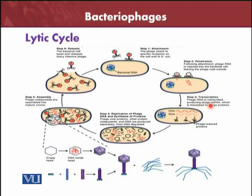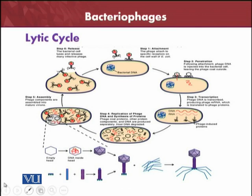Then transcription begins — replication is started. The phage DNA produces phage mRNA, which is translated into phage proteins. The DNA and RNA and phage-induced proteins are already present, causing changes in the infected cells. Replication continues, producing different kinds of proteins — structural proteins and non-structural proteins. The host DNA continues to be degraded.